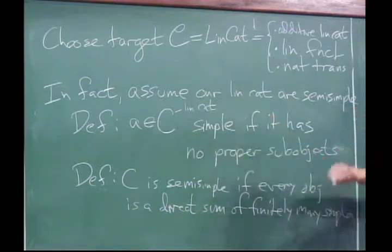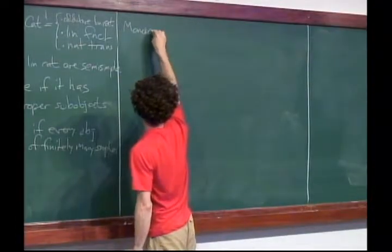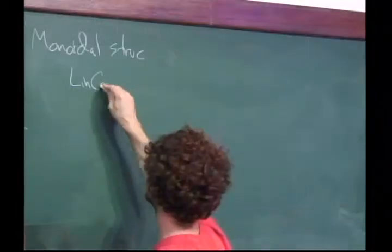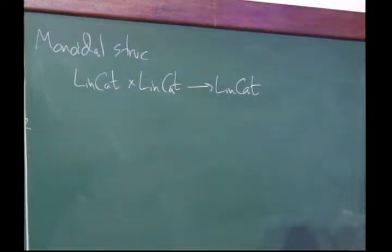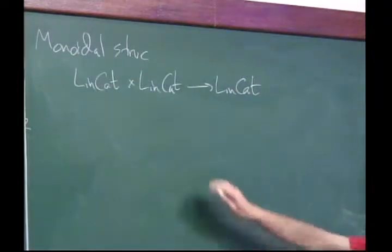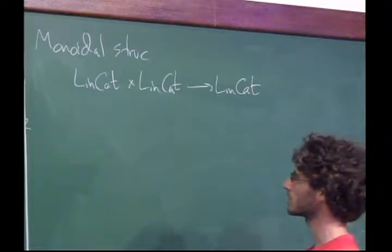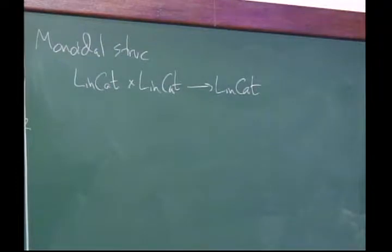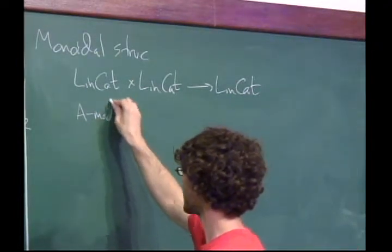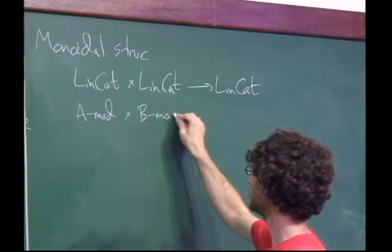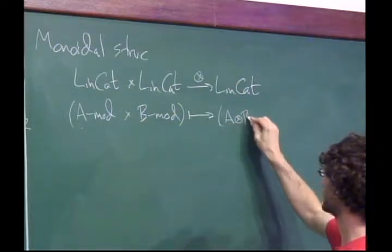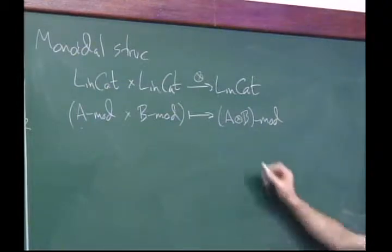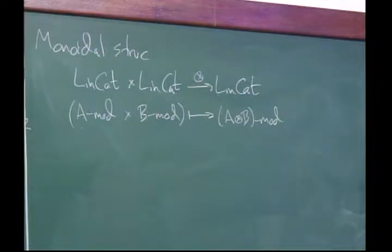This was supposed to have some kind of monoidal structure, so I need to discuss that briefly. If I have two linear categories, I need to be able to take their product. A particular kind of linear category is A-mod for some algebra A. If I took two such gadgets, A-mod and B-mod, their tensor product as linear categories is equivalent to representations of the tensor product A tensor B. So you can have that in mind as what is going on.